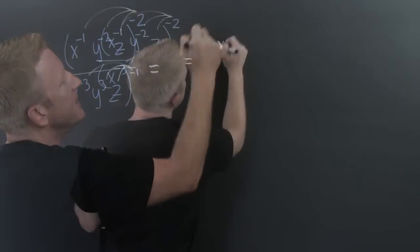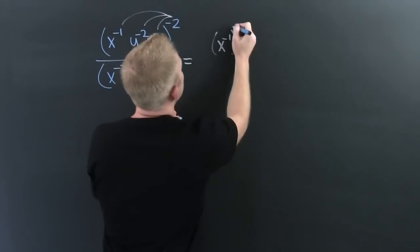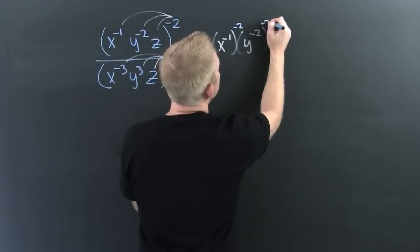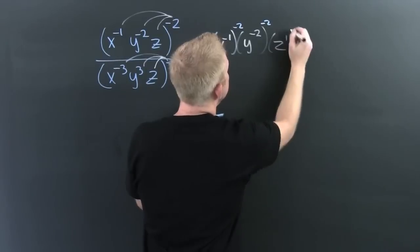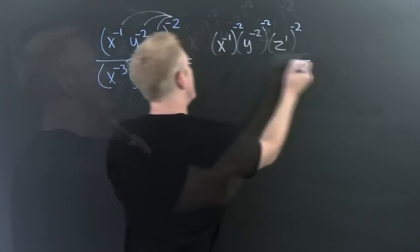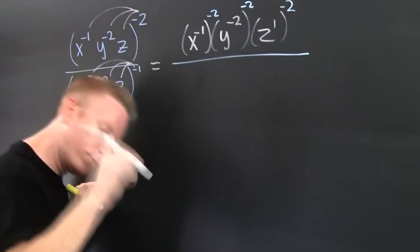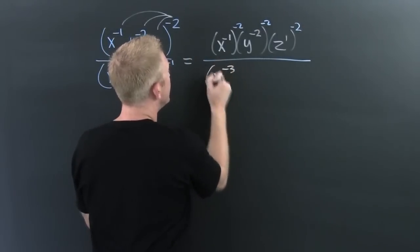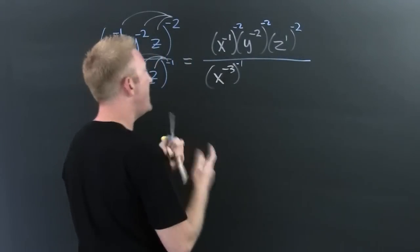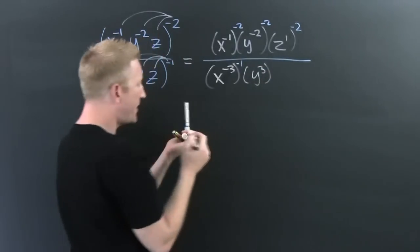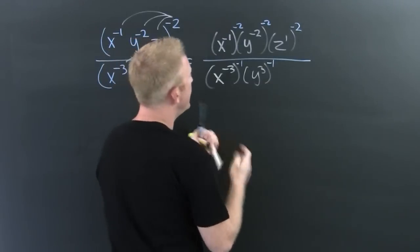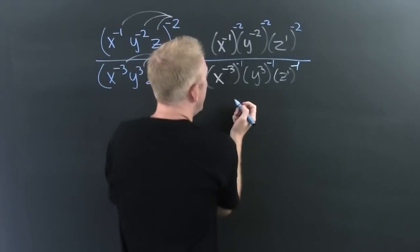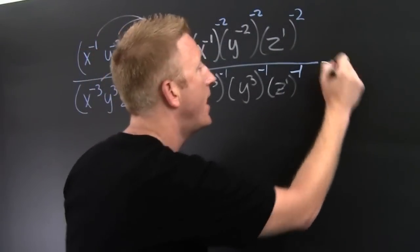This is x to the minus one, to the minus two, and then y to the minus two, to the minus two, and then this is z to the one, to the minus two, divided by — wait for it, wait for it, they're like maracas — x to the minus three, to the minus one, and then y to the three, to the minus one, and then z to the one, to the minus one. I think that one's done — finish him!